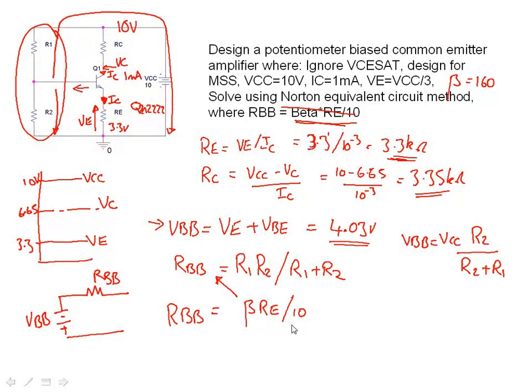So now what I'm going to do is I'm going to use this expression up here for RBB and then I'm going to equate these two values. So I'll simplify that over here. I've got beta RE over 10 is equal to R1 R2 over R1 plus R2. And if I take this one over here, I've got VBB divided by VCC is equal to R2 over R1 plus R2. Well, if I take this part of the equation, I can substitute this value in for that value and I've just got R1, so I can equate these two equations.